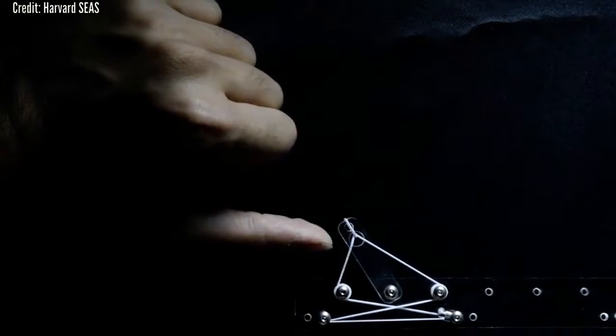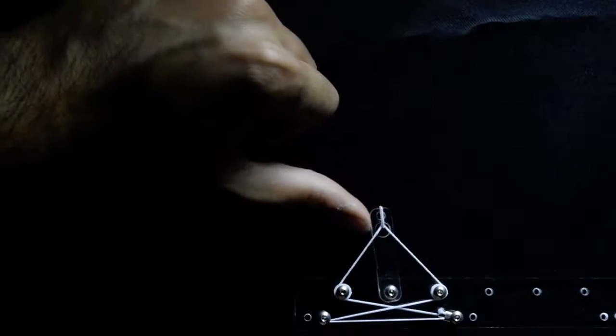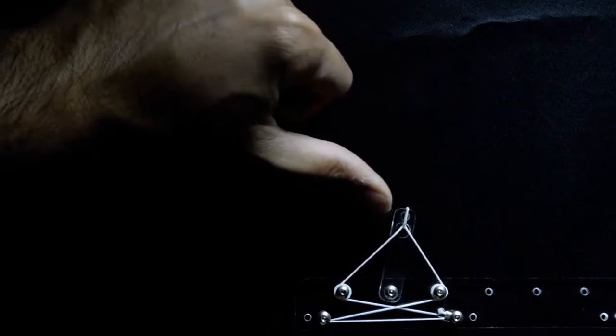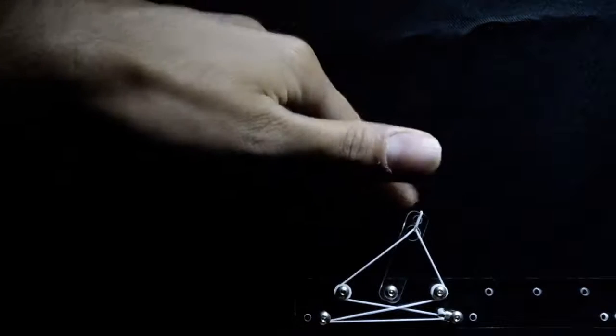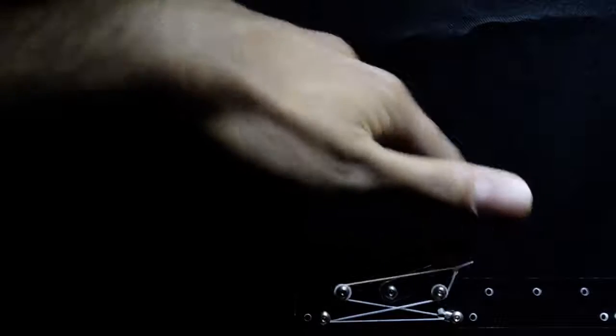The researchers dubbed the assembly as totomorphic materials because of their ability to morph into any stable shape. The researchers connected individual unit cells with neutrally stable joints, building 2D and 3D structures from individual totomorphic cells.